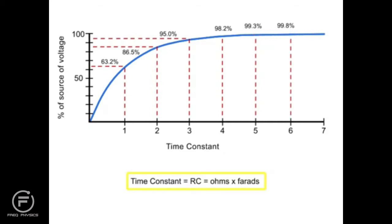A time constant in seconds is equal to the resistance of the circuit in ohms multiplied by the value of the capacitance in farads.